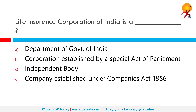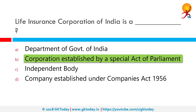Life Insurance Corporation of India is a corporation established by a special act of parliament. It is an Indian state-owned insurance group and investment company headquartered in Mumbai. In 1955, parliamentarian Amol Bharati raised the matter of insurance fraud by owners of private insurance agencies. The parliament of India then passed the Life Insurance India Act on 19th June 1956, creating the Life Insurance Corporation of India, which started operating in September of that year. The nationalization of the life insurance business in India was a result of the Industrial Policy Resolution of 1956, which had created a policy framework for extending state control over at least 17 sectors of the economy, including life insurance.